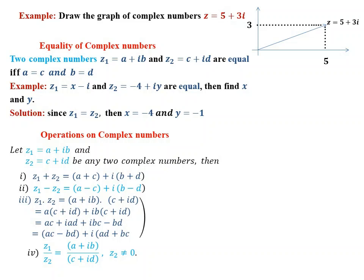Example: Let z1 equal x minus 1 times i and z2 equal minus 4 plus iy. If z1 equals z2, find x and y. Since z1 equals z2, we equate the corresponding real and imaginary parts.